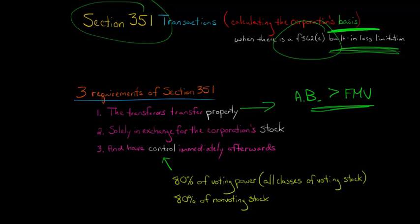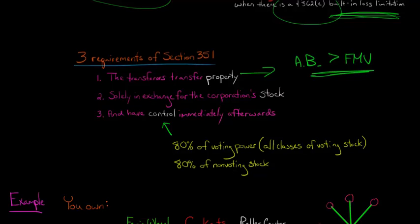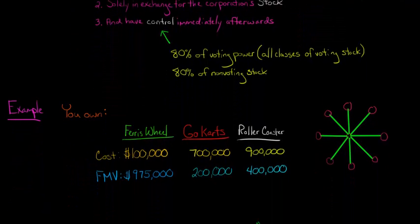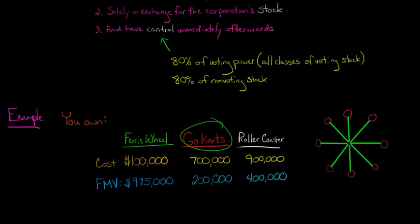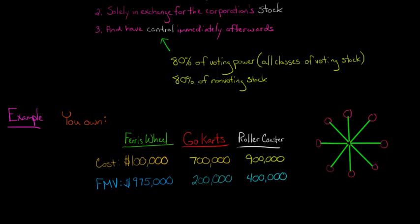Let me work through an example to make it easier to understand. Let's say you own the following three types of property: a Ferris wheel, a set of go-karts — those little cars you drive around in — and a roller coaster. For each asset, we'll assume the adjusted basis and the cost are the same thing in this example.